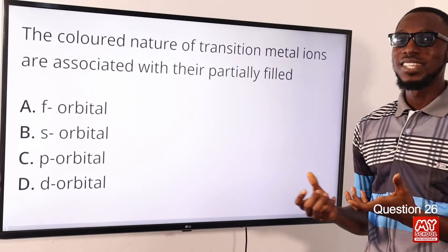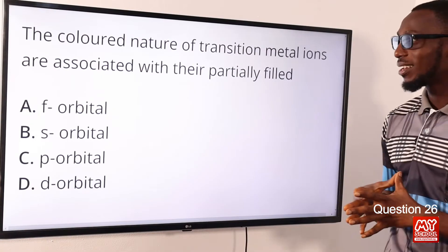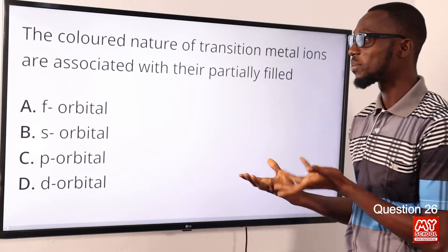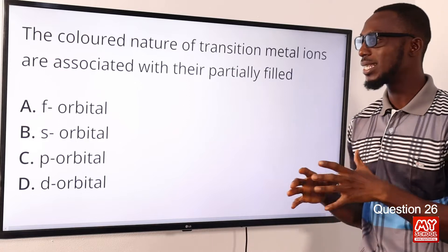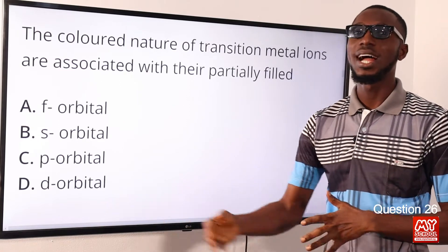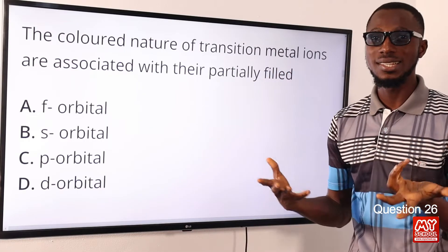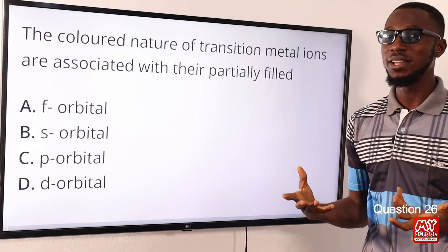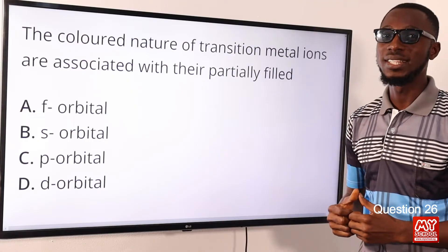Question 26: The colored nature of transition metal ions is associated with their partially what filled orbitals? They are partially filled d-orbitals, which accounts for the special characteristics and properties that transition metals display. The correct option is option D for the d-orbital.